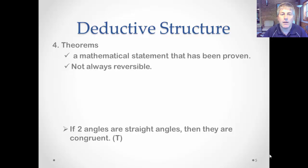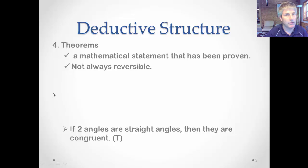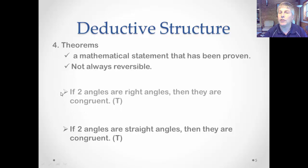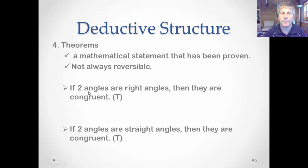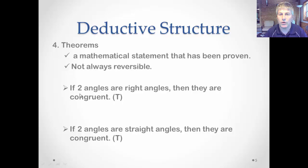The final element of deductive structure is theorems. Theorems are mathematical statements that have already been proven. Unlike definitions, theorems are not always reversible. Write this in your notes: if two angles are right angles, then they are congruent. You'll use this in the proof process.